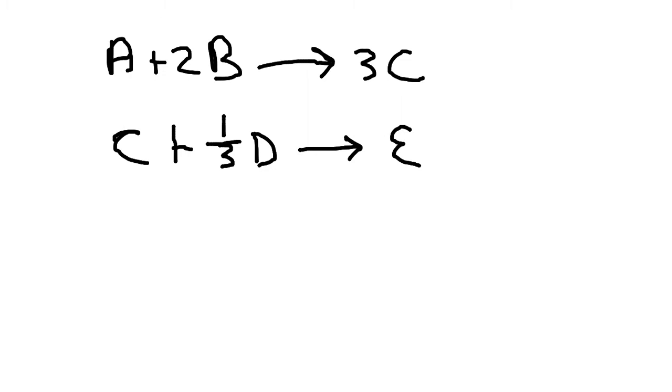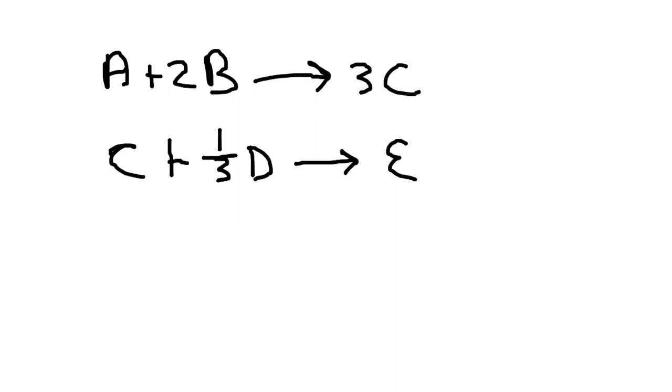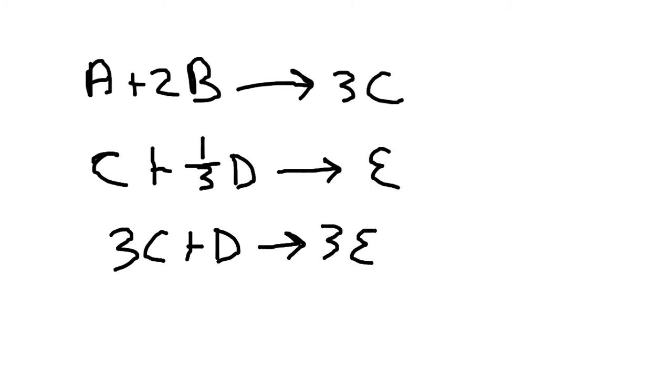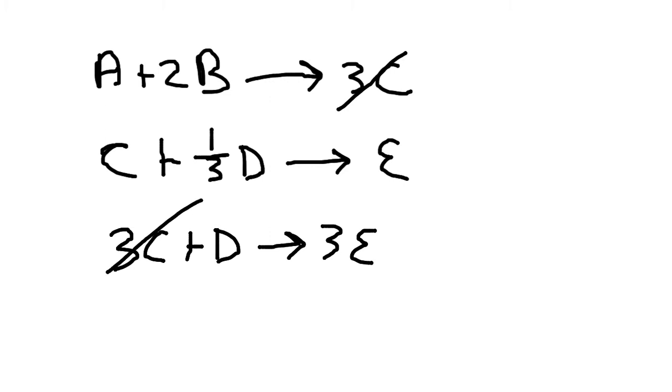Let's make this a little bit more complicated so we can look at how numbering is used. In this situation we have A plus 2B yields 3C. And then in this equation C plus one-third D yields E. We know that we could possibly cancel out C because C shows up on both sides of the equation. But here we could only cancel out one of the C's because there's only one over here. But if we multiply this entire equation by 3, then we could cancel out both of those. And so we would get 3C plus D yields 3E. And in that case I could cancel out that 3C and that 3C and my final equation would be A plus 2B plus D yields 3E.